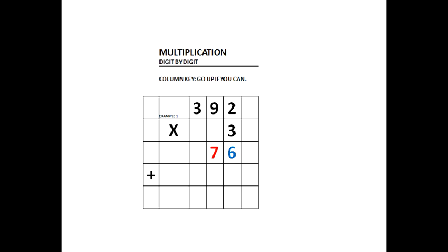The product 27: the 7 digit starts under the 9. The 2 is in the next column to the left of the 7, and it goes up as high as it can. 3 times 3 is 9, and the 9 is in the column where the 3 is in the 392.